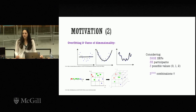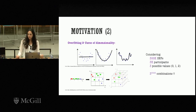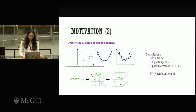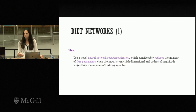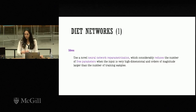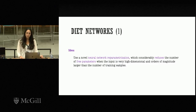Moreover, in very high-dimensional space with very few points, it's hard to cover the whole space and we encounter the curse of dimensionality. Given that, we decided to propose a new framework that reparameterizes a neural network to reduce the number of free parameters. This framework is specifically designed for cases where the number of samples is orders of magnitude lower than the number of features.